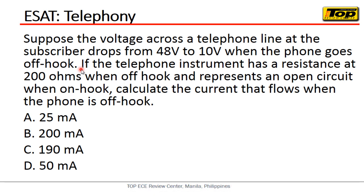So the 48 volts coming from the central office drops to 10 volts by the time it reaches your telephone. If the telephone instrument has a resistance of 200 ohms when off-hook and represents an open circuit when on-hook, calculate the current that flows when the phone is off-hook.